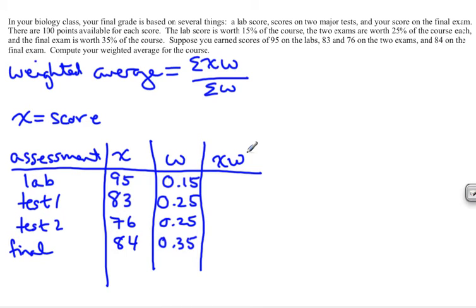So we're going to do 95 times 0.15, and we get 14.25. Then we'll take 83 times 0.25, and we get 20.75.